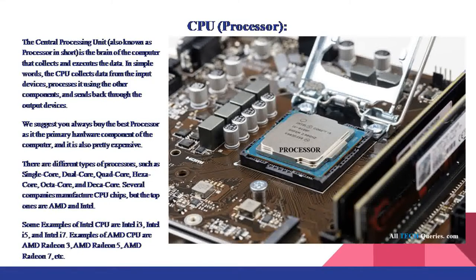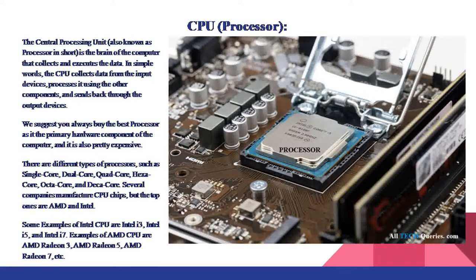The central processing unit, also known as the processor, is the brain of the computer that collects and executes data. The CPU collects data from the input devices, processes it using other components, and sends it back through the output devices. There are different types of processors such as single-core, dual-core, quad-core, hexa-core, octa-core, and DECA-core.